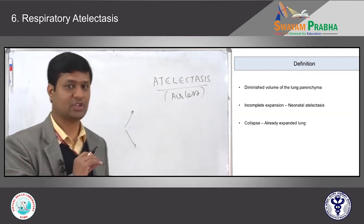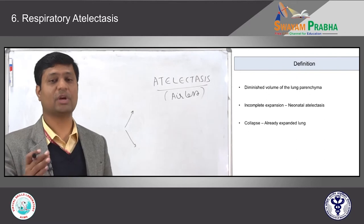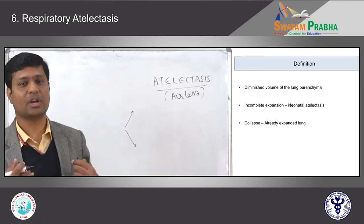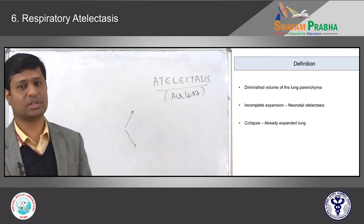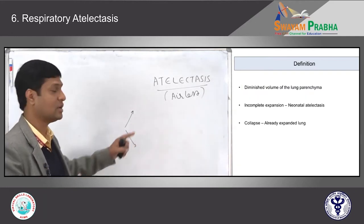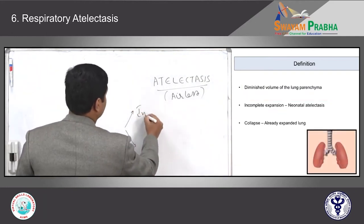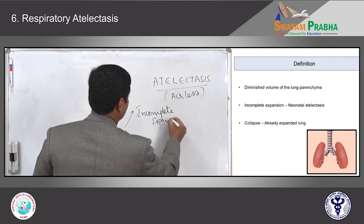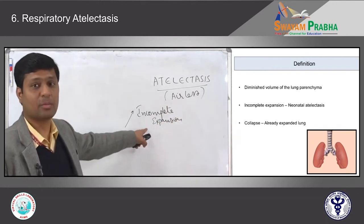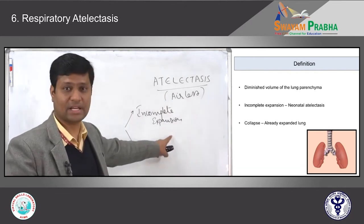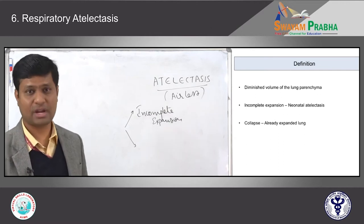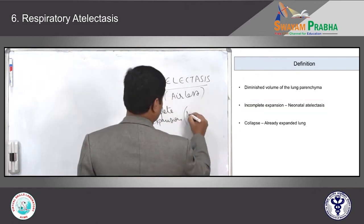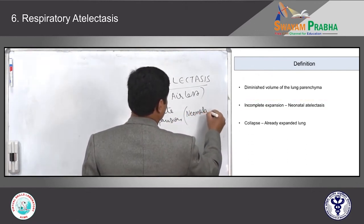If there is no expansion of the lung parenchyma, there is no air. Whenever the baby cries, the lung expands and air enters, making it normal. When there is incomplete expansion of the lung parenchyma, it amounts to an airless lung — we call it an atelectatic lung. Because this is commonly seen in infants, we call it infantile atelectasis or neonatal atelectasis.